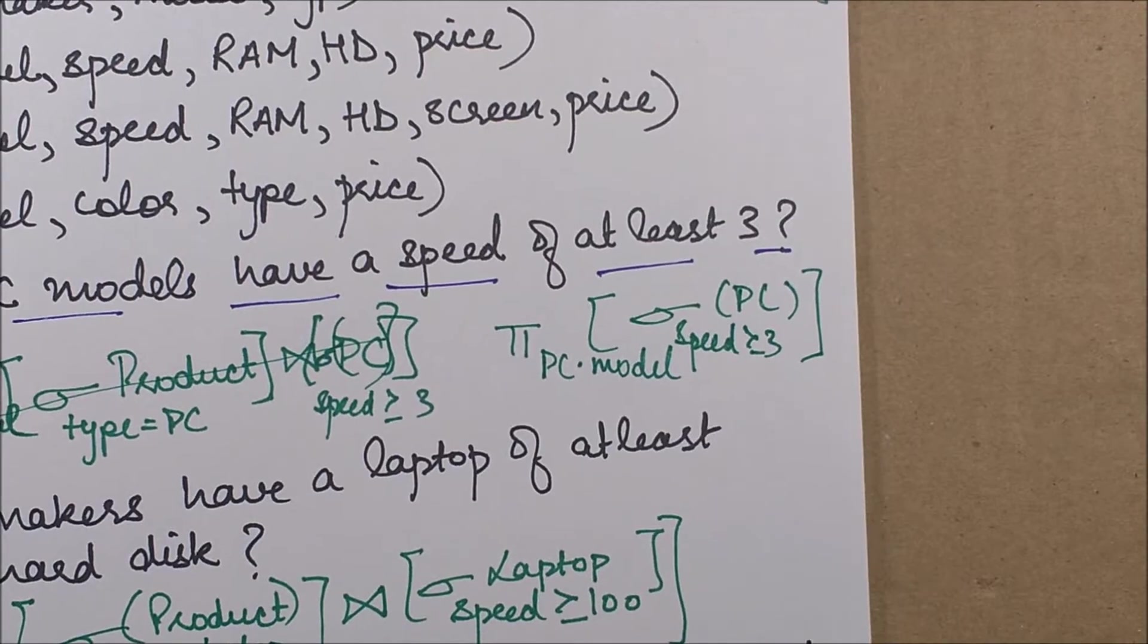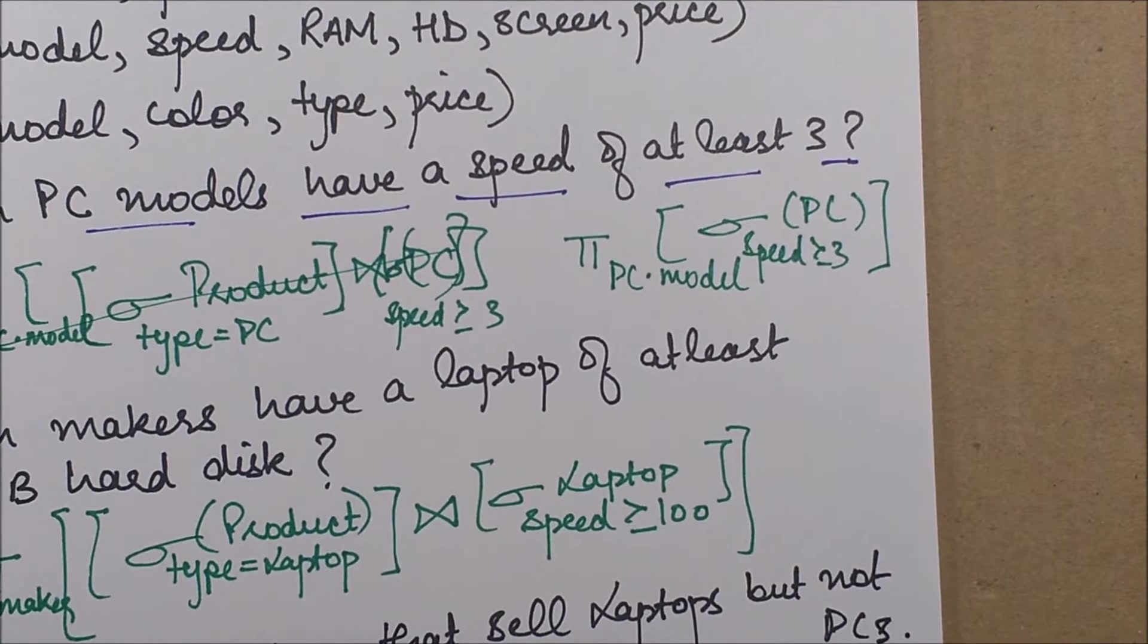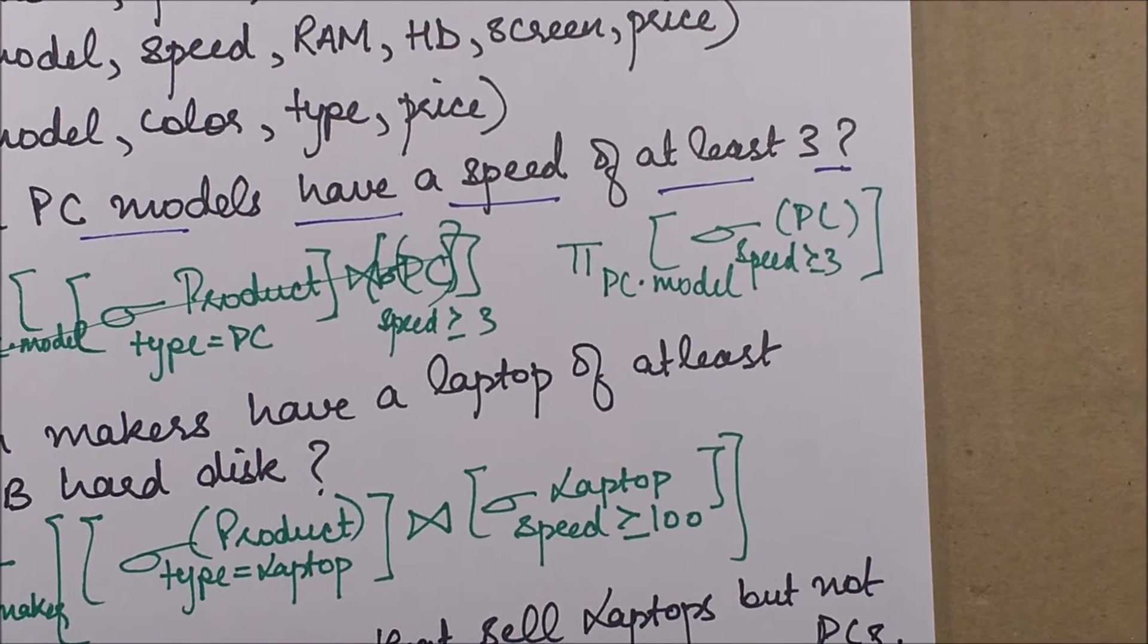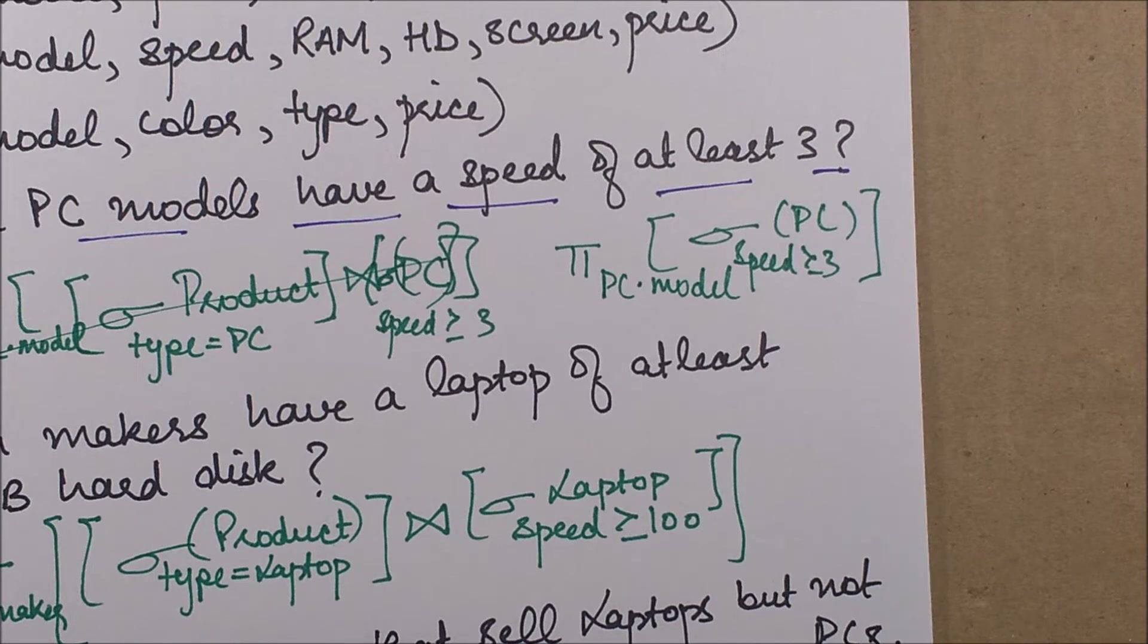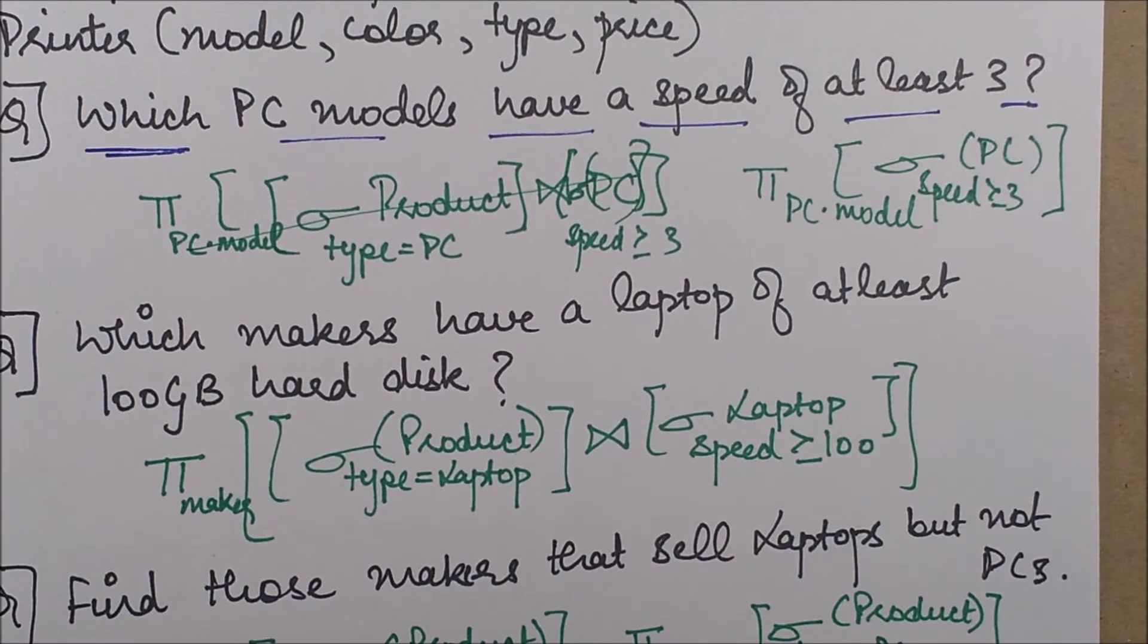So that's all for this relational algebra expression. Let's move on to the next one. The next one says: which makers have a laptop of at least 100 GB hard disk?